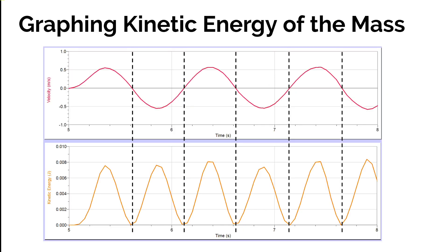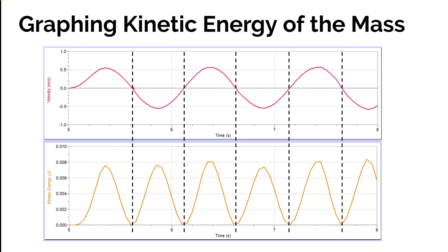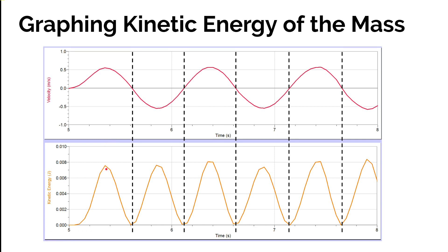I have our velocity graphed as a function of time, and below that, the kinetic energy of that mass graphed over time — a calculated value from Logger Pro. The kinetic energy of the object is zero when the velocity is zero, which occurs at either the lowest or highest position, A or C. The kinetic energy is at maximum when the object is moving the fastest. Kinetic energy can't be negative — it's only a positive value. So the kinetic energy peaks anytime there's a positive velocity maximum or a negative velocity maximum, making it look like a sine curve similar to the velocity versus time graph.